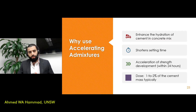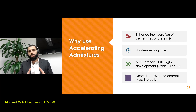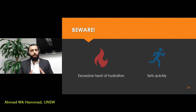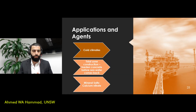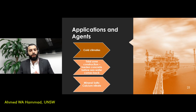Accelerating admixtures enhance the hydration of cement and shorten the setting time — concrete can set within 24 hours when accelerating admixtures are added. The dose is between 1 to 2 percent of cement mass. Over-adding this admixture can result in excessive heat of hydration and the concrete becoming very prone to quick setting. Applications include cold climates, where increasing heat of hydration is desirable, and tidal zone construction.